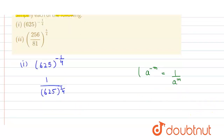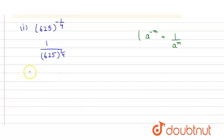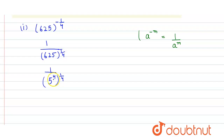Here, 625 can be written as 5 raised to power 4, because 5 raised to power 4 equals 5 × 5 × 5 × 5 = 625. So the expression becomes 1 divided by 5 raised to power 4, and that whole thing raised to power 1 by 4.